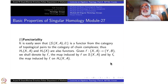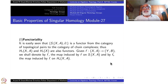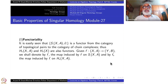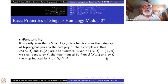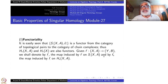The first property is functoriality. We have seen that from a topological space to the chain complex level it is a functor: S(X,A) is a covariant functor from the category of topological pairs to the category of chain complexes. Taking homology is a functor from chain complexes to graded abelian groups. Composing these two, the association (X,A) → H*(X,A) and X → H*(X) are covariant functors.